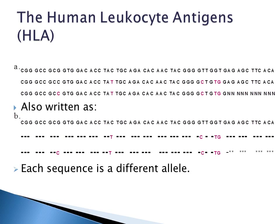In this slide you can see the human leukocyte antigens and the polymorphisms located in the HLA sequences. You can write the actual nucleotides and see in pink or red the variations, or you can write the consensus sequence where lines mean the nucleotide is the same, and where you see a red nucleotide that means there's a difference at that location. Each sequence is a different allele.